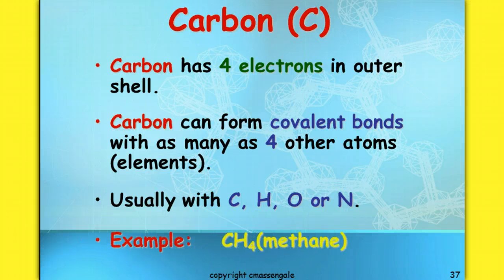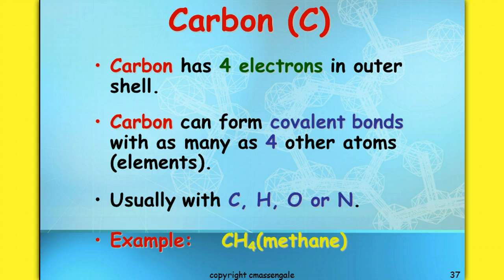For example, methane is a gas that's one of the byproducts when dairy cows eat hay. They produce a lot of methane gas during their digestive process. The carbon forms four covalent bonds, each of those electrons with a hydrogen.